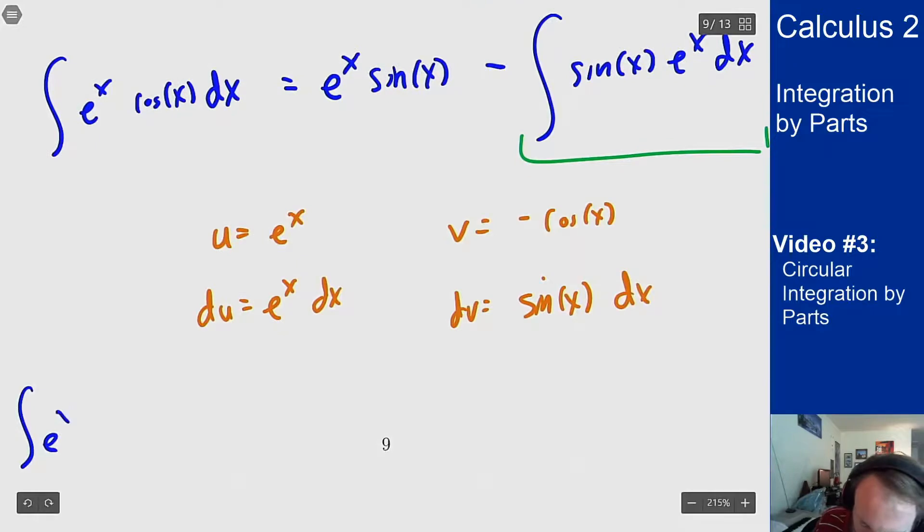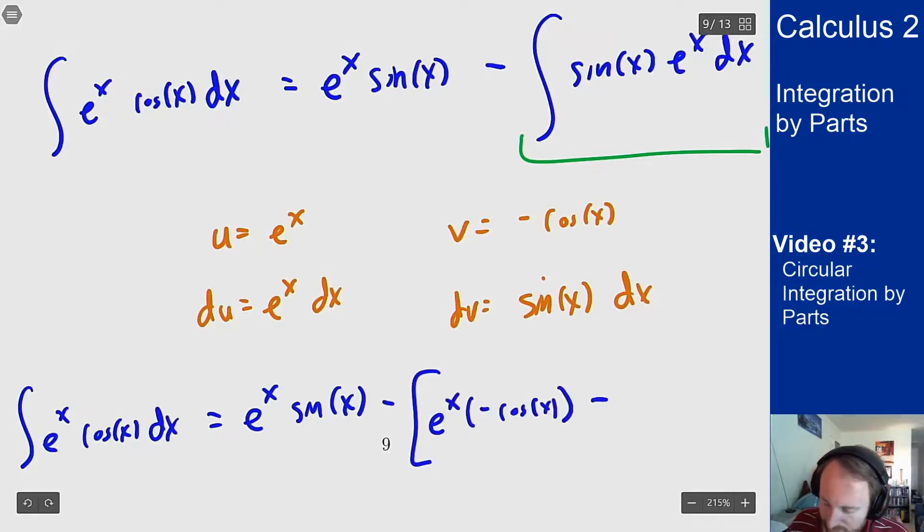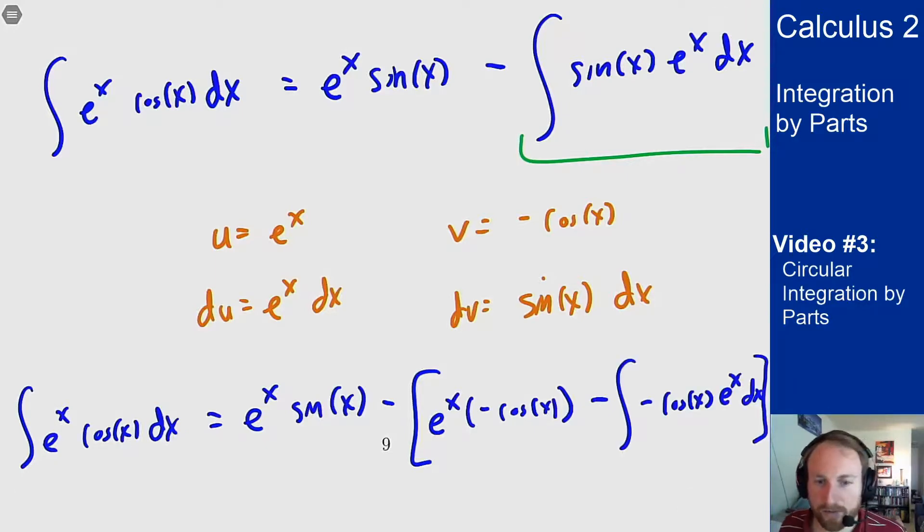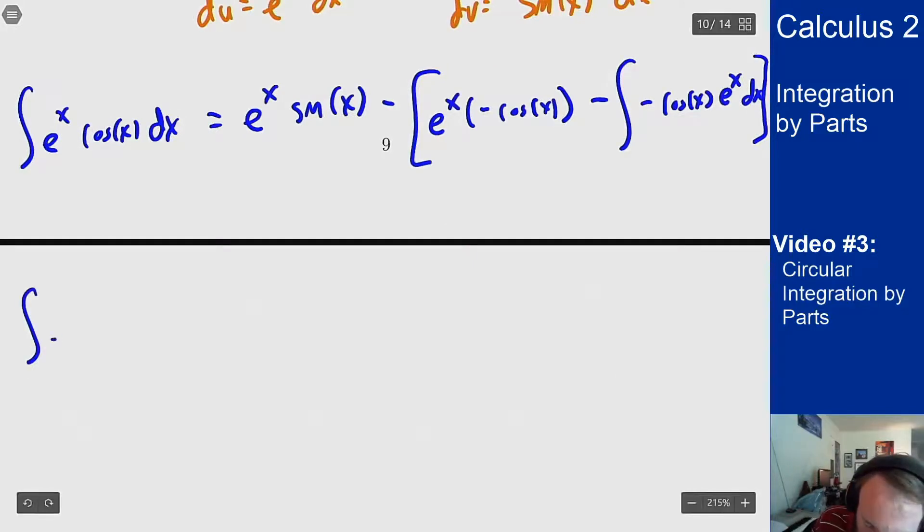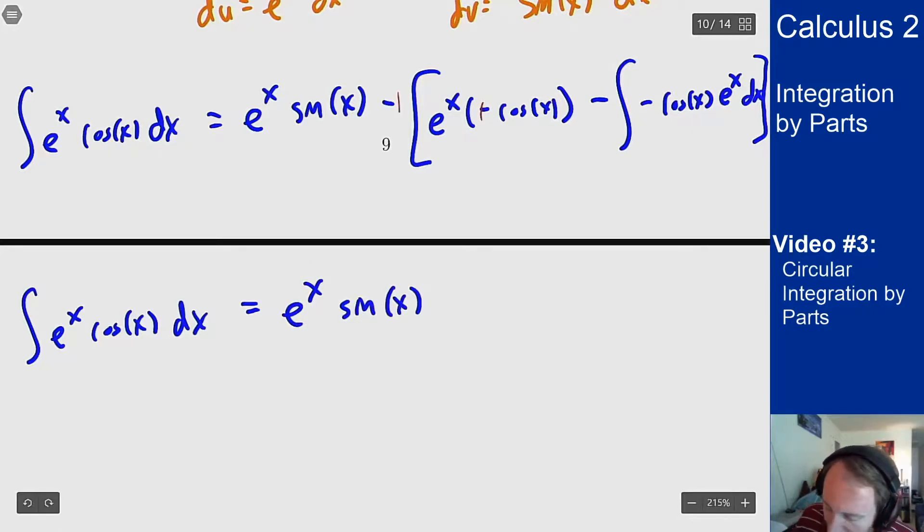And now I can do this integration step one more time. So the thing on the left is still there, equals the e to the x sine of x term still sticks around, and then minus uv minus vdu. Now we're going to simplify some signs and redistribute some terms. So I still get e to the x cosine of x dx on the left. On the right I have e to the x sine of x. I have two negative signs to give me a plus e to the x cosine x. Then I have three minus signs in this last term so I get minus integral of e to the x cosine of x dx.